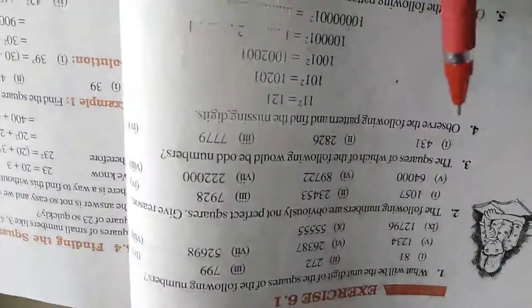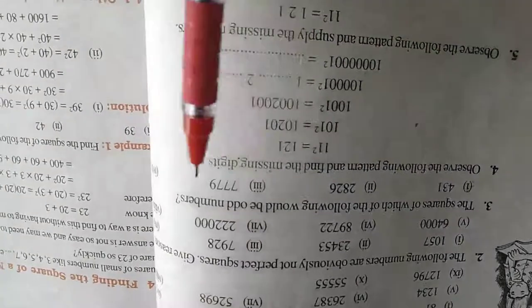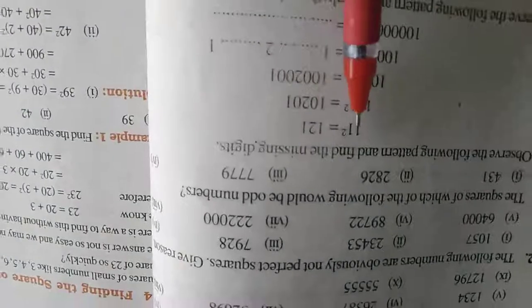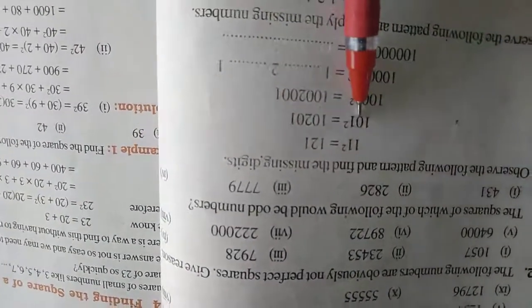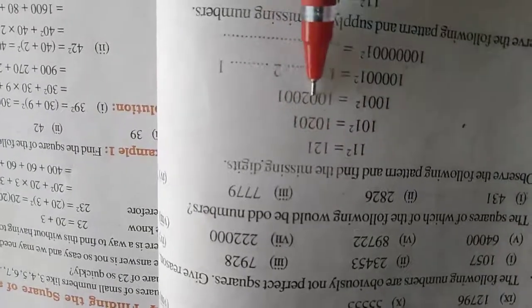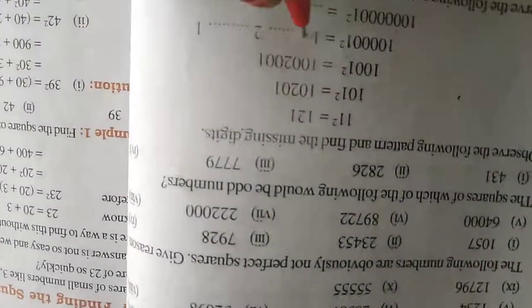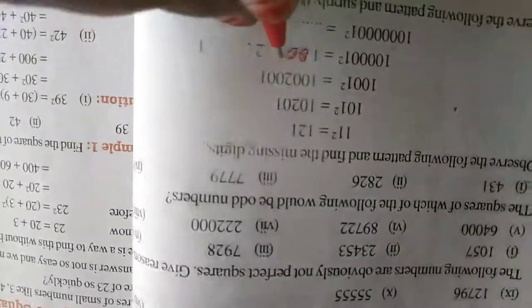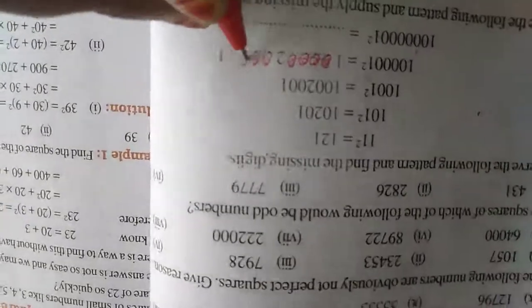See the 4th sum? The 4th sum is book work. Observe the following pattern and find the missing digits. First of all, there is 11 squared: 1, 2, 1. So here we have 1, 2, 3, 4.